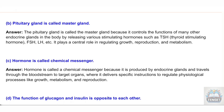C) Hormone is called a chemical messenger. Answer: A hormone is called a chemical messenger because it is produced by endocrine glands and travels through the bloodstream to target organs, where it delivers specific instructions to regulate physiological processes like growth, metabolism, and reproduction.